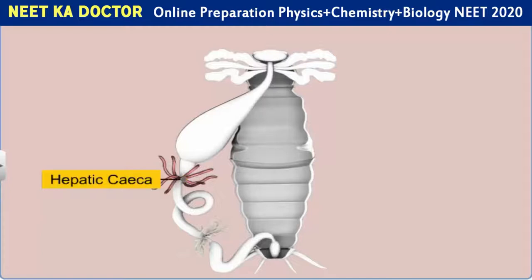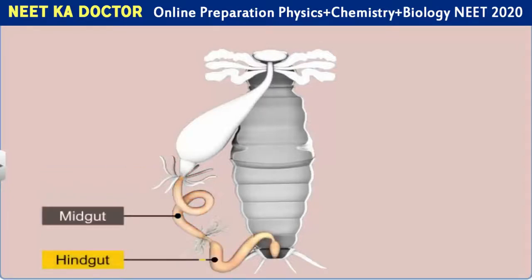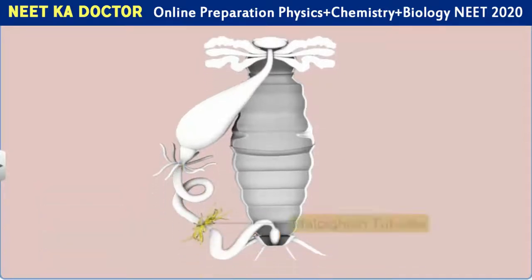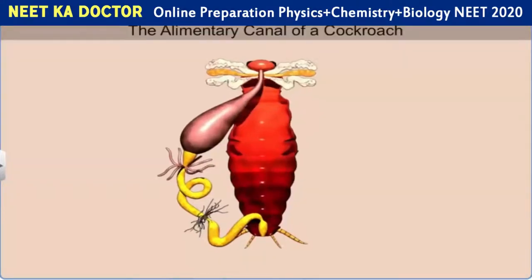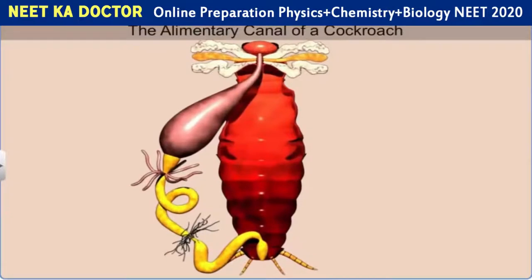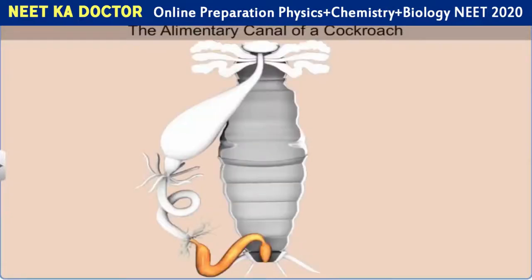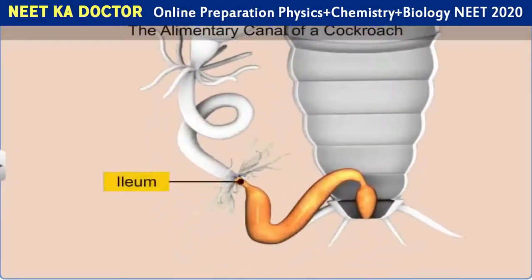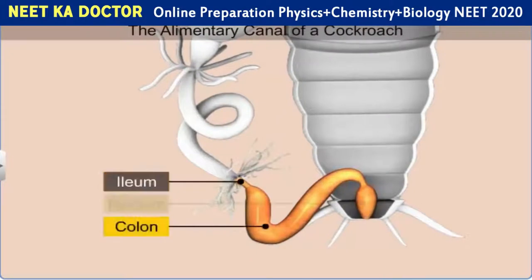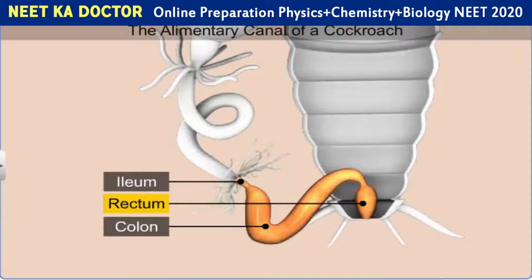At the junction of the foregut and midgut is a ring of six to eight tubules called hepatic or gastric caeca which secrete digestive juice. Similarly, at the junction of the midgut and hindgut is a ring of numerous filamentous yellow-colored malpighian tubules which function as excretory organs. The midgut is followed by the hindgut which is broader and is divided into ileum, colon and rectum. The rectum opens to the exterior through a small aperture called the anus.